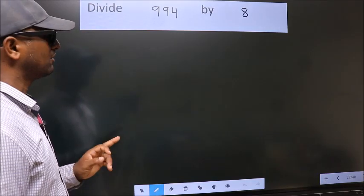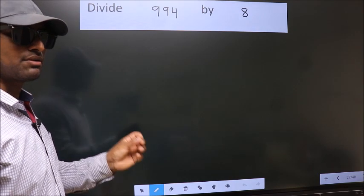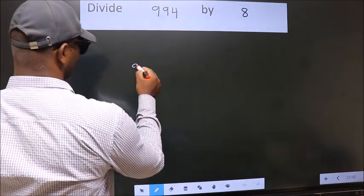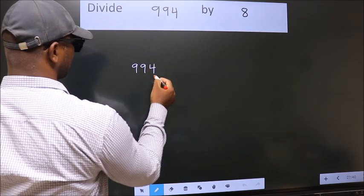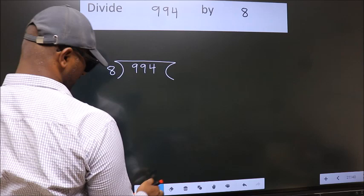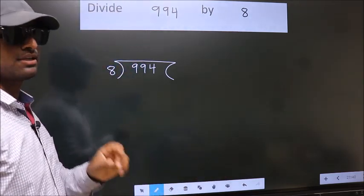Divide 994 by 8. To do this division, we should frame it in this way. 994 here, 8 here. This is your step 1.